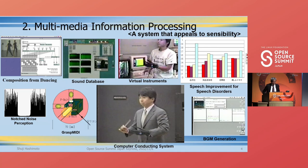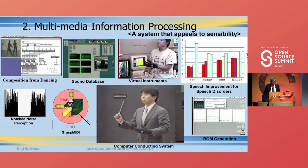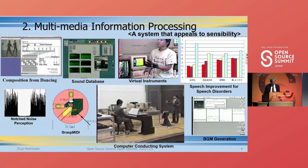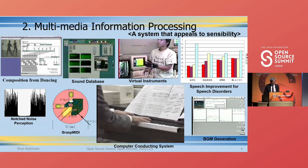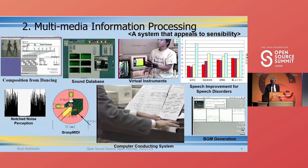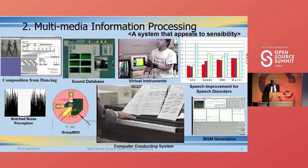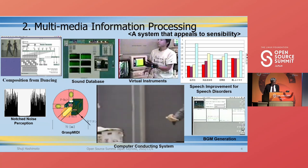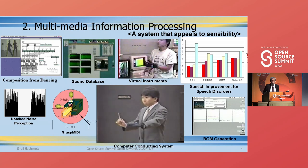The second is media information processing. We built various systems, especially for interactive music. For example, this is a system that recognized human conducting. A computer orchestra and a human pianist performed a concert under the direction of a human conductor. Conducting is the world's global language, so it can be understood by both computer and human pianist.